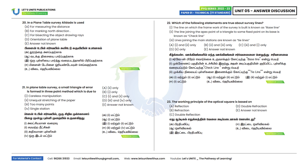Twentieth question: In a plane table survey, what is the alidade used for? The plane table alidade is used for orientation. Option D is the correct answer.